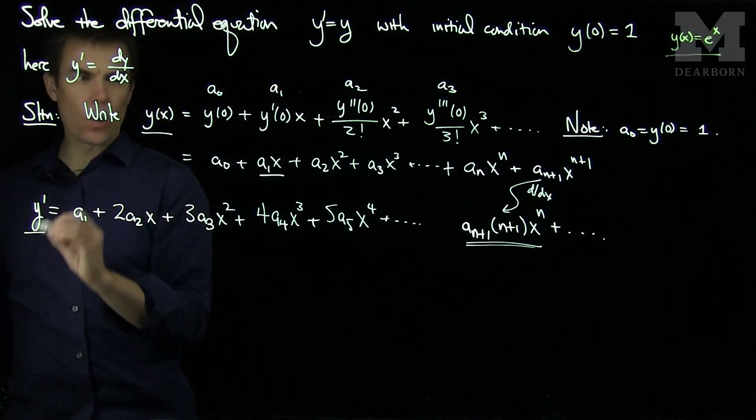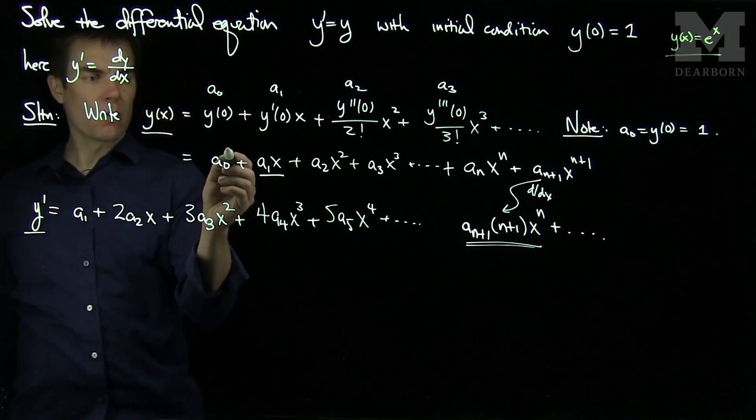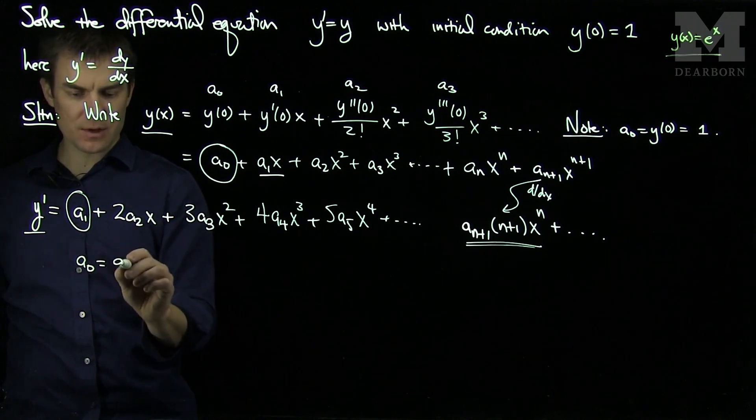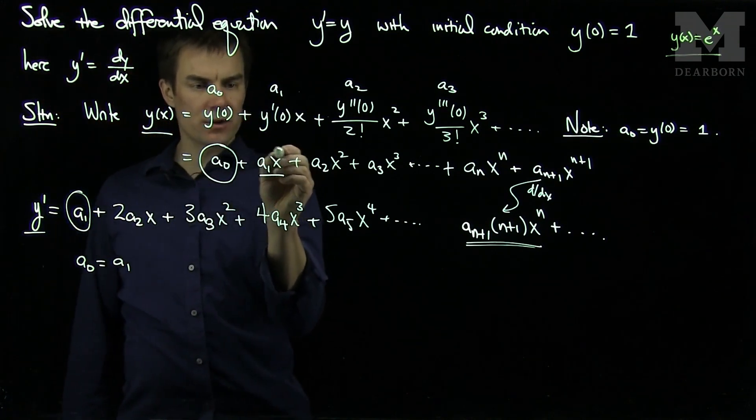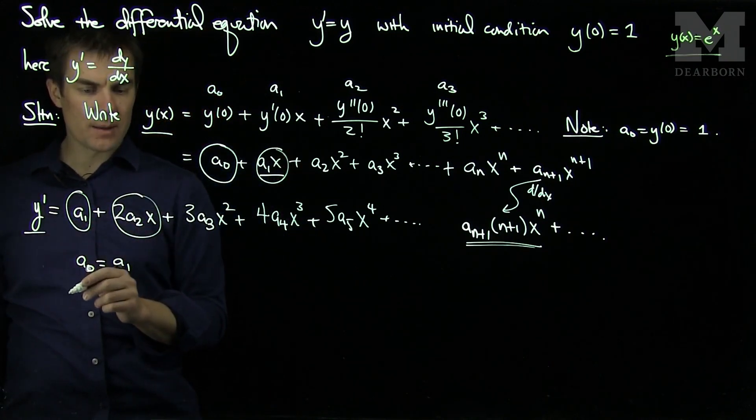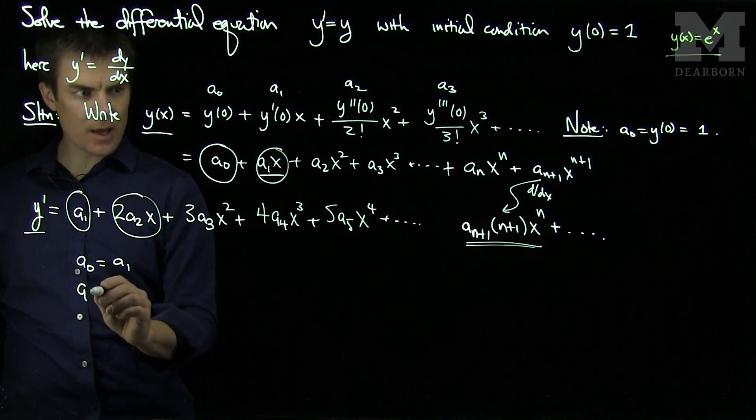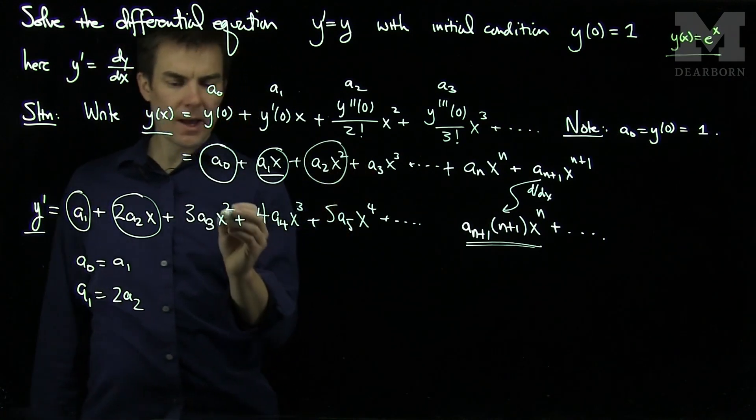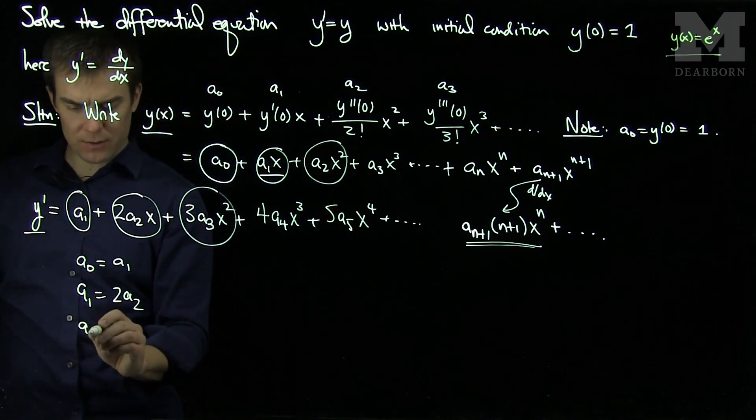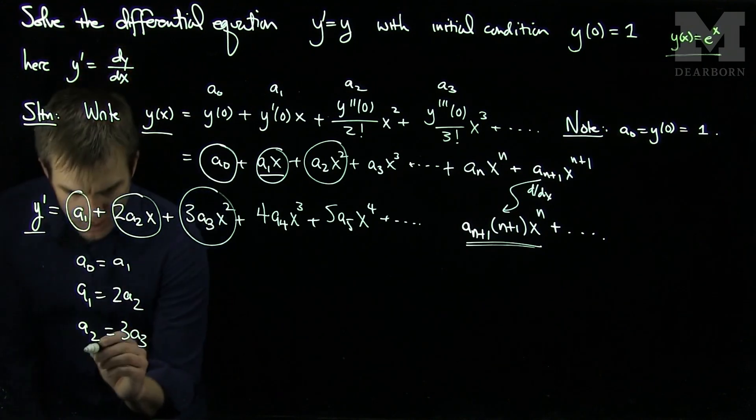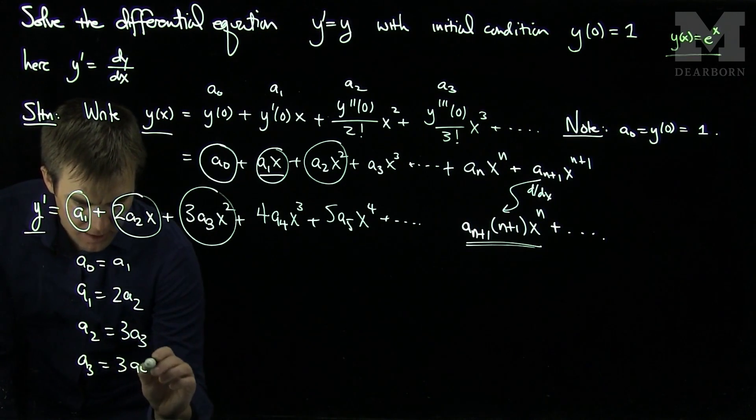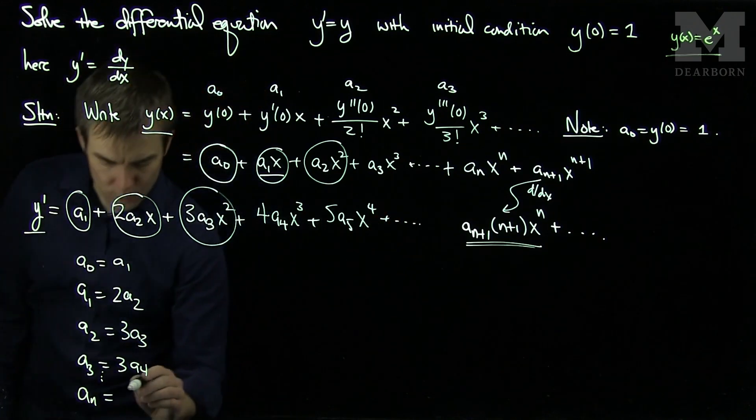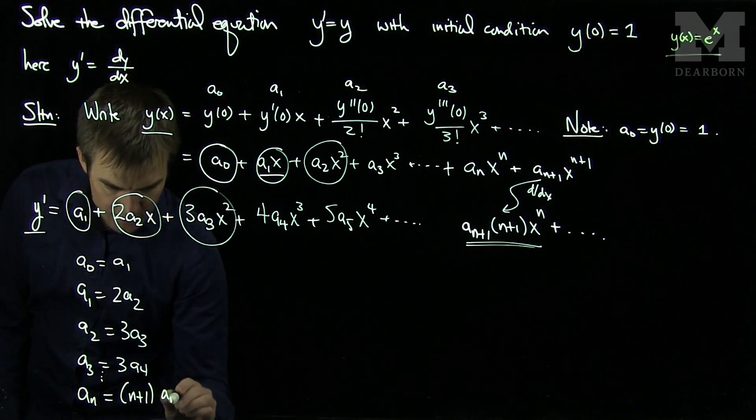Now since y has to equal y prime, we can equate these coefficients. Over here the constant term is a0, over here the constant term is a1. So a0 is equal to a1. Now I can look at the coefficient of x. I have a1x, I have 2 times a2x, so that tells me that a1 is 2 a2. a2 has to be equal to 3 a3, so a2 is 3 a3. a3 will be 3 a4. And finally, an will be equal to n plus 1, an plus 1.